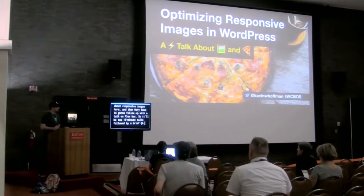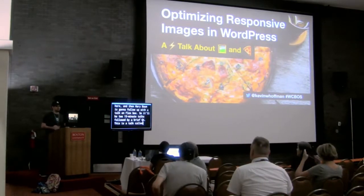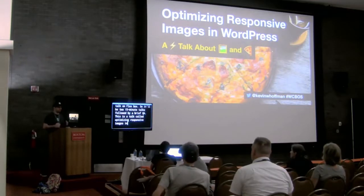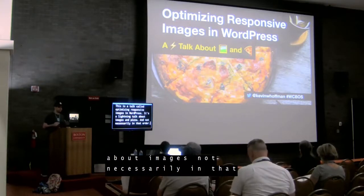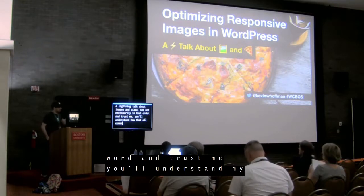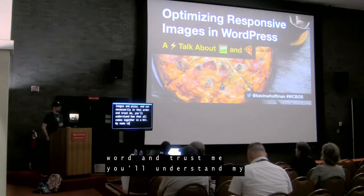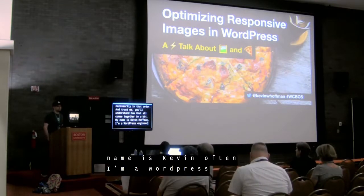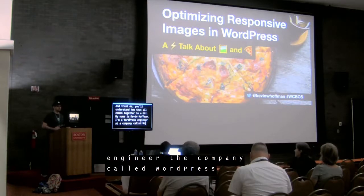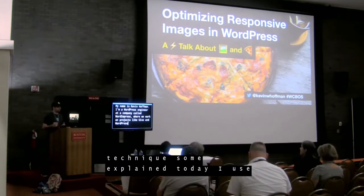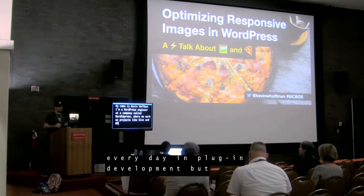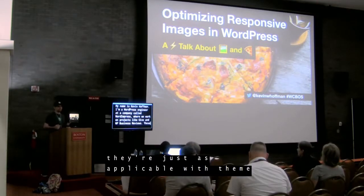This is a talk called Optimizing Responsive Images in WordPress. It's a lightning talk about images and pizza, not necessarily in that order. My name is Kevin Hoffman. I'm a WordPress engineer at a company called Word and Press, where we work on plugins like Give and WP Business Reviews. The techniques I'm explaining today I use every day in plugin development, but they're just as applicable in theme development and for anyone running a website and managing images.